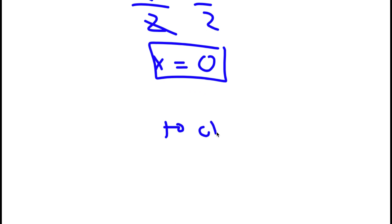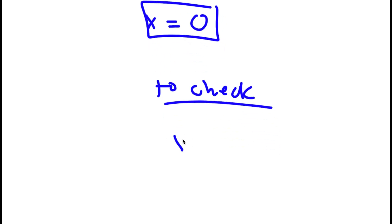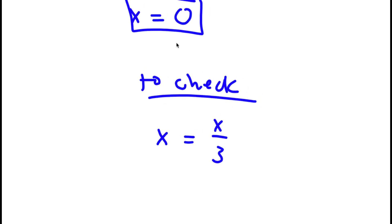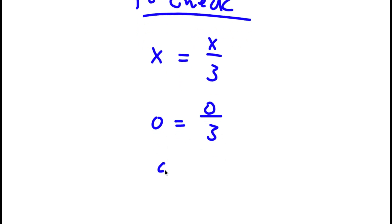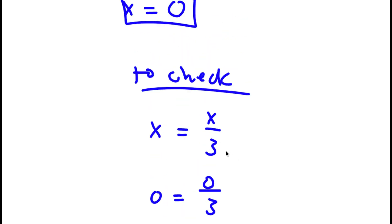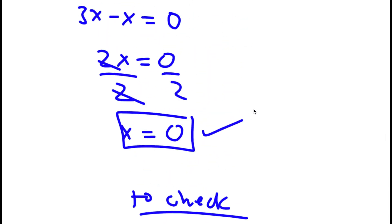Now to check: I have x is equal to x over 3. We know that x equals 0. So I have 0 is equal to 0 over 3. Well, 0 divided by any number is equal to 0. So I have 0 equals 0. And because this is right, my solution is right.